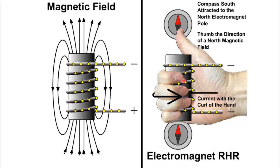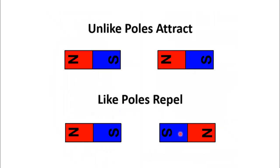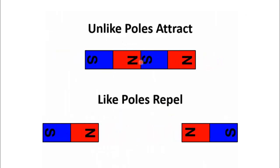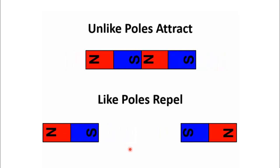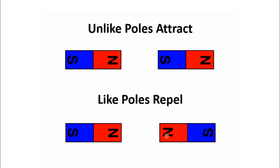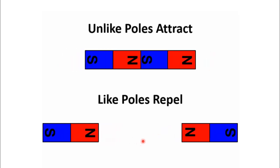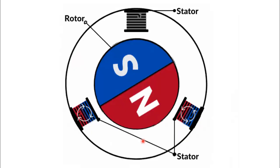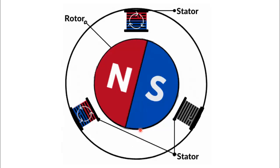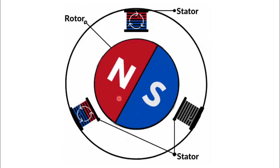Another property of magnets is that unlike poles attract each other. South and north poles attract each other, whereas like poles repel each other. These are the two properties that will be used in the BLDC motor. Now let's talk about the functionality of this BLDC motor and how it works.